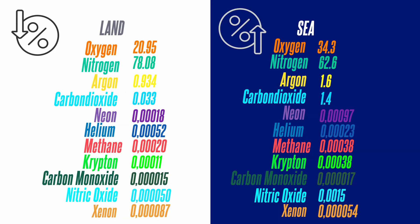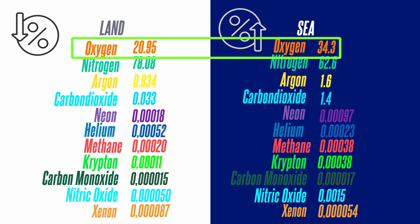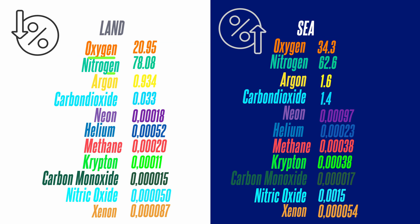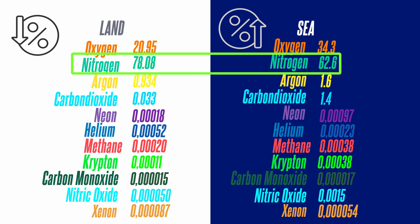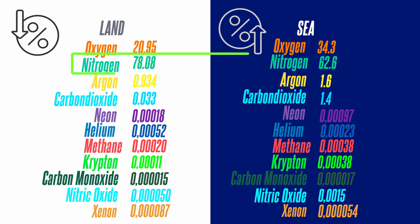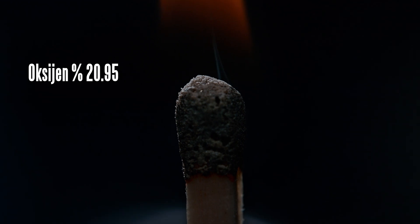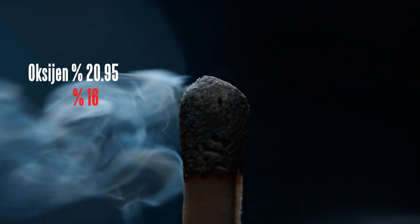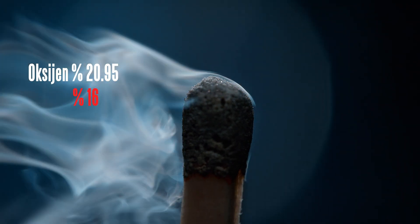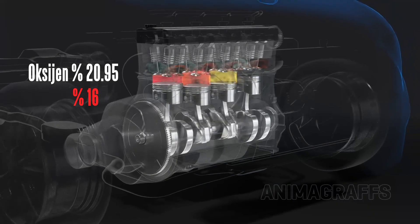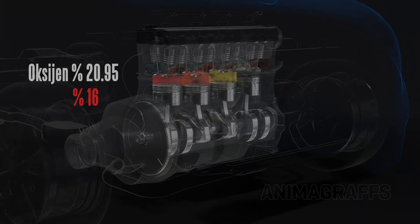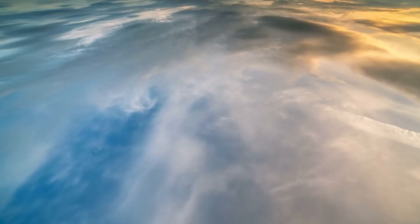There is a different balance of elements on land and in the sea. There is 21% oxygen on land and 34% in the sea. There is 78% nitrogen on land and 62% in the sea. If these ratios were to change places, life would end. But if oxygen decreases — for example, if it falls below 16% — even a match will not light. Nothing catches fire, ovens don't work, engines stop. And 16% oxygen is not enough for breathing. We all die.